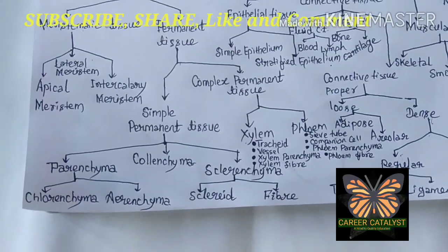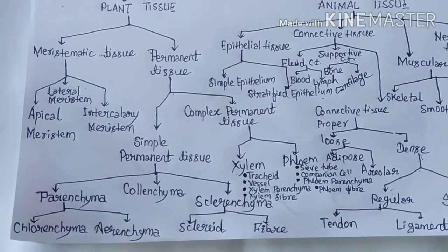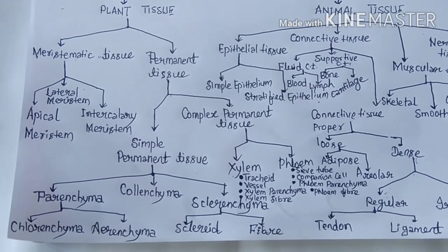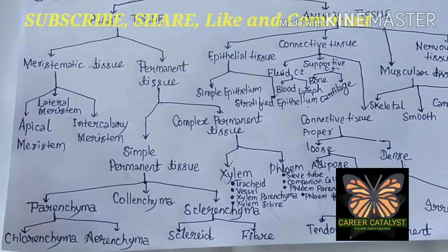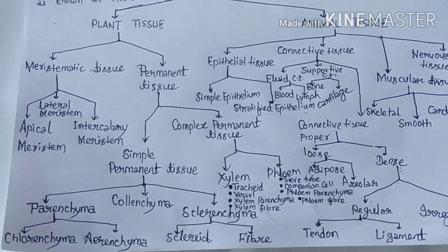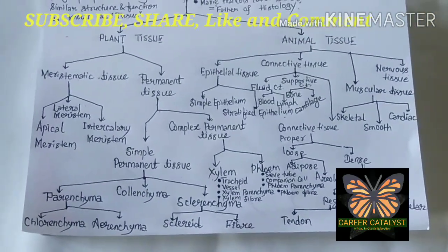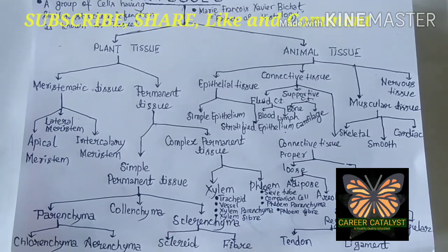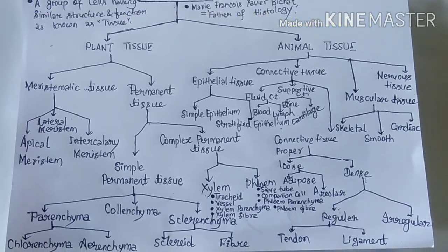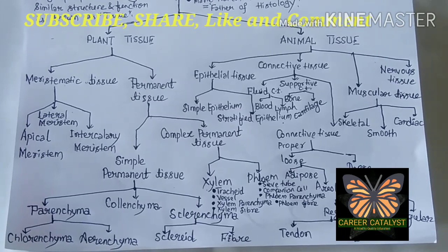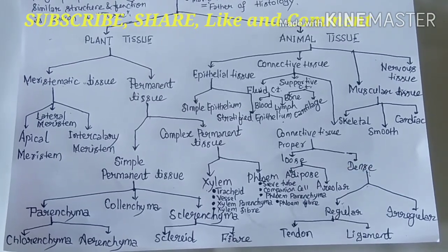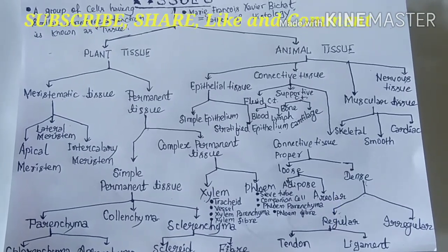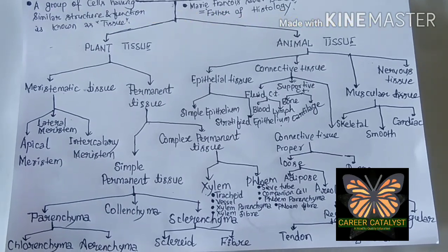If we talk about the functions of parenchyma — since it is a kind of simple permanent tissue — it functions for the synthesis and storage of food particles. In terrestrial plants, parenchyma with chloroplasts is known as chlorenchyma, and in aquatic plants it is known as aerenchyma. Chlorenchyma prepares food through photosynthesis and also stores food.